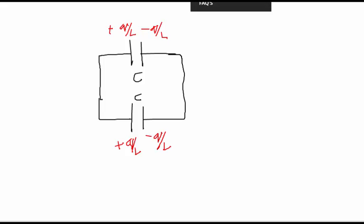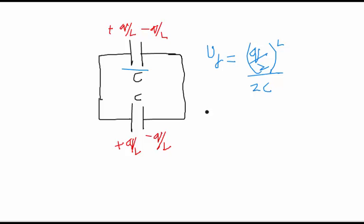So the final energy we can easily write. We can write for both. This has (Q/2)²/2C plus the other capacitor (Q/2)²/2C. So when we calculate this, we get Q²/4C.